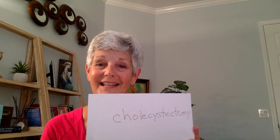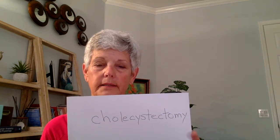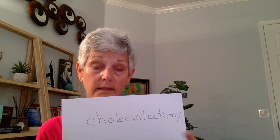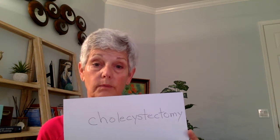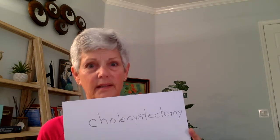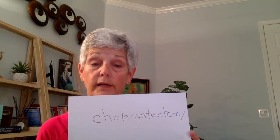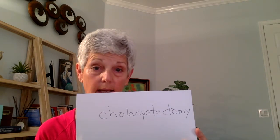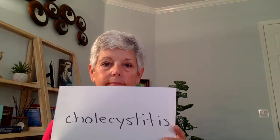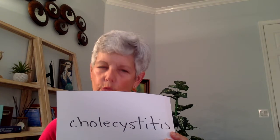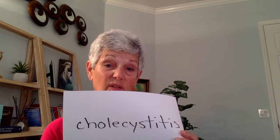This term is cholecystectomy. That is a very long word and kind of challenging to spell. But in case you don't know, what it means is we took a gallbladder out. Cholecyst is med speak for gallbladder. So cholecyst would be the root word and ectomy would be the suffix that means we took it out. Well, now that you know cholecystectomy means removing a gallbladder, you might be able to figure out what this next word means.